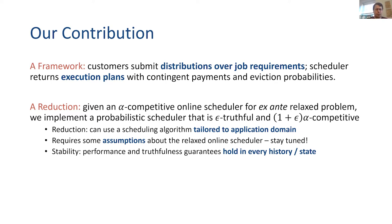The reason we want to focus on reductions is because we imagine that people are going to be designing schedulers tailored to their specific domain. We want to be able to reuse that work and basically just add an incentive layer on top that doesn't require a lot of knowledge about the specific workloads. This isn't a black box reduction — we do require some assumptions about the relaxed online scheduler, but we try to argue these are mild.